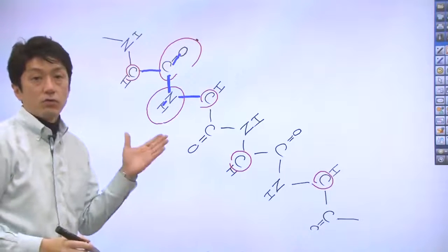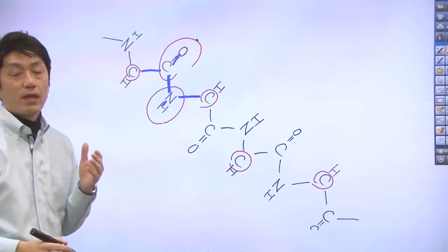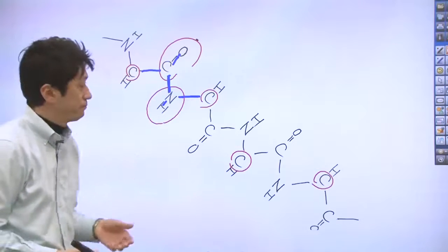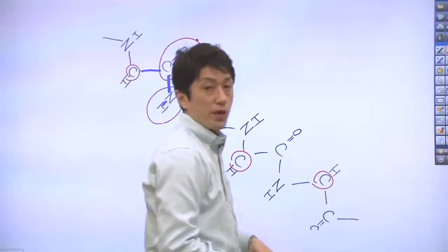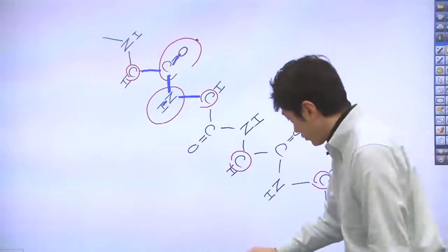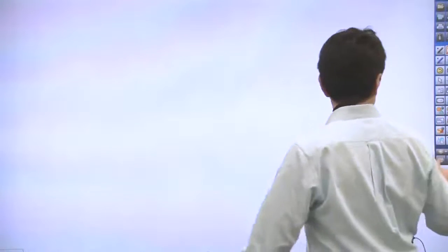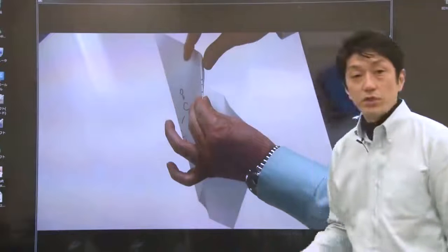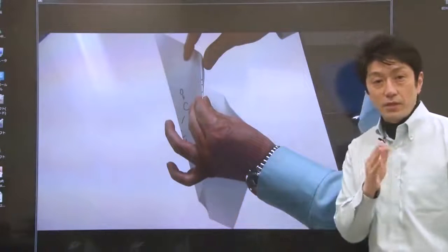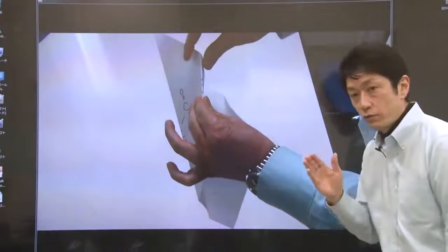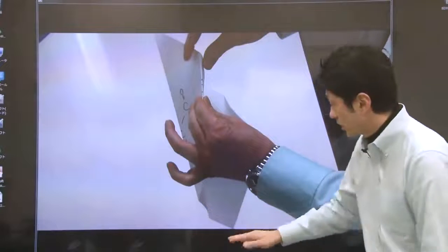These are all called alpha carbons. I will show you a video I took this morning. Hold on a minute. Let me show you the video here. This video shows you how to fold the paper. Just try yourself.